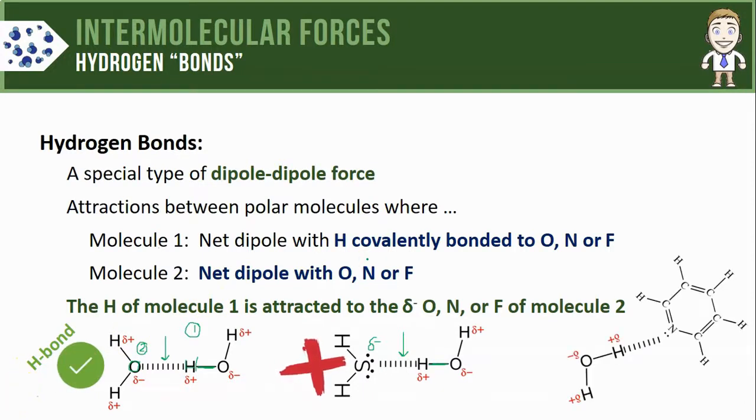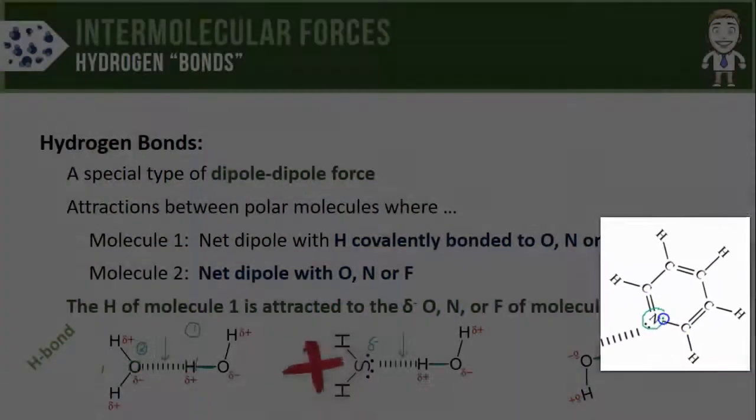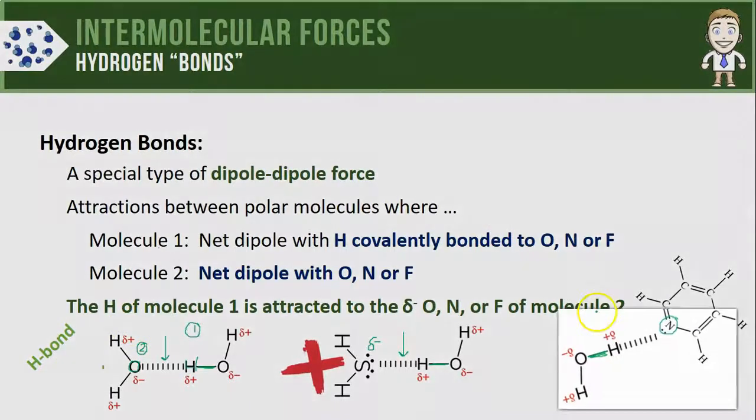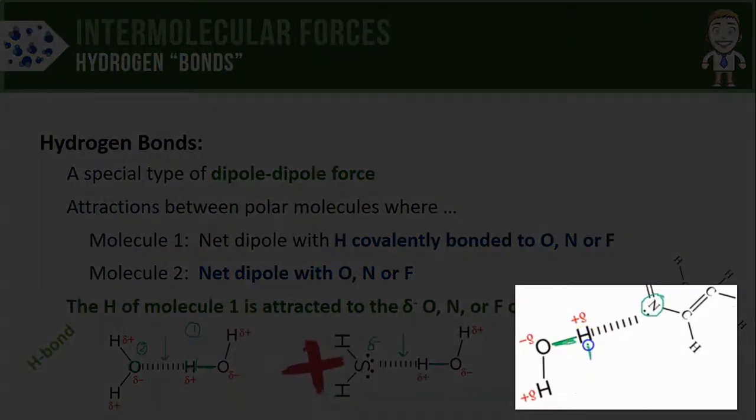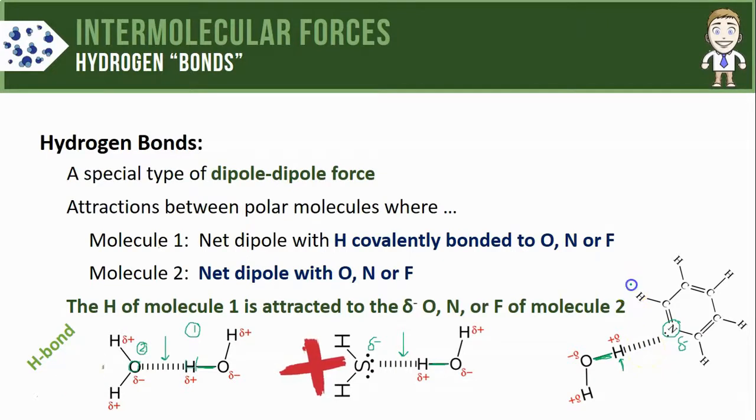And here's one final example with a water molecule being attracted to a large organic molecule known as pyridine. The water molecule, of course, meets the qualification for molecule one, since we've got hydrogen covalently bonded to oxygen. The pyridine molecule meets the qualification for molecule two, since it is polar and contains a nitrogen atom. And our final check is that the hydrogen of molecule one is attracted to the partially negative nitrogen in the pyridine, which is definitely happening. That means this dipole-dipole attraction would also count as a hydrogen bond.